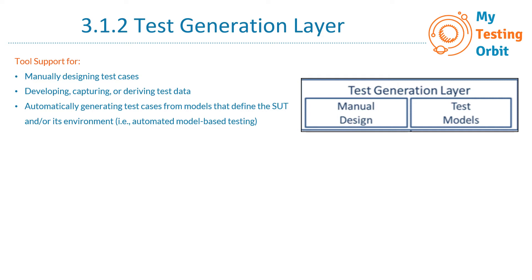We can derive a test model from a specification model, but why do we need a test model if we already have a specification model? As a tester, we have a very different view of the system compared to developers or business analysts. Our main focus is on the robustness of the system — we think of all edge cases and negative scenarios. The test model supports classic test design techniques such as boundary value analysis, decision table testing, equivalence partitioning, use case testing, and state transition testing, to improve the quality of test design.